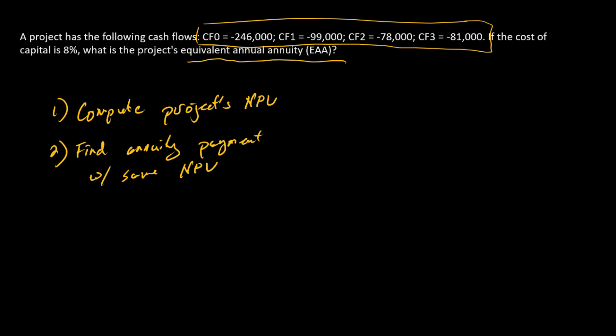Now, critically here, when we calculate the annuity payment, we need to think of an annuity with the same number of payments as the number of years in the project. And so this project here, we've got cash flows from zero to time three. So this is a three-year project. And so in our annuity calculation here, we need a three-year annuity.